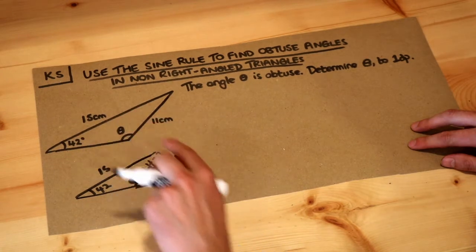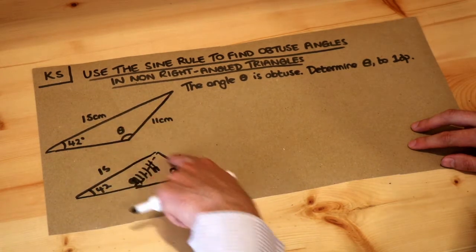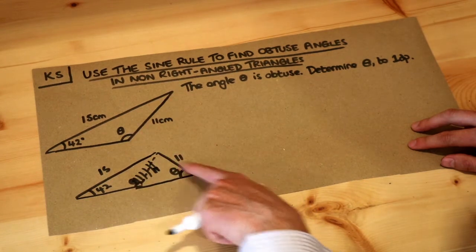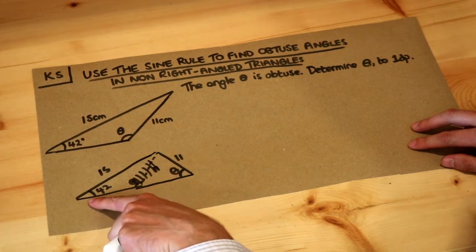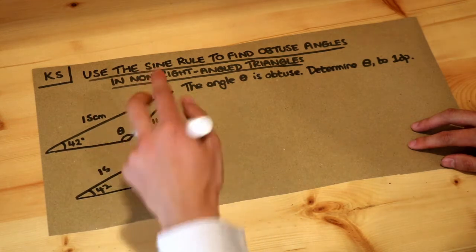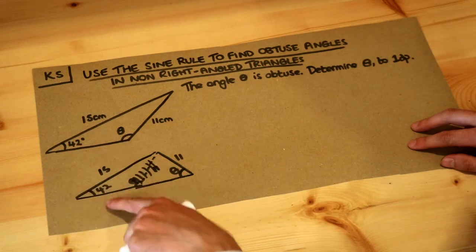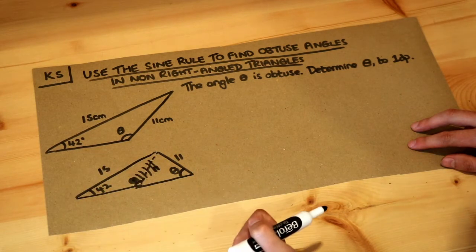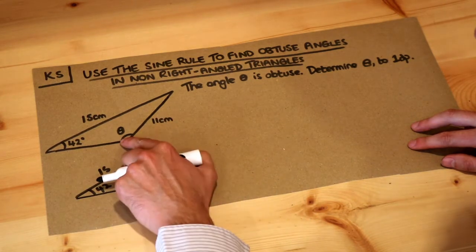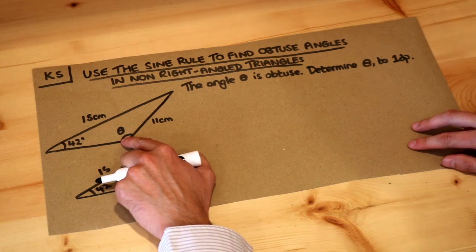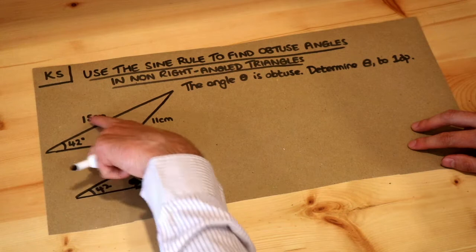So if I just cross that out, believe it or not, this triangle is the same as this triangle in the sense that this length is the same as this length, because I made sure that this length here is the same as that one. The 15 is the same, the 42 is the same, so these are effectively the same triangles, despite the fact they're obviously different. I've managed to make these two lengths the same and the angle the same, but it's a different triangle. That's because in this case the angle theta is obtuse, and then I've managed to manipulate the triangle without changing any of these figures here—the 11, the 15, or 42—such that theta was now acute.